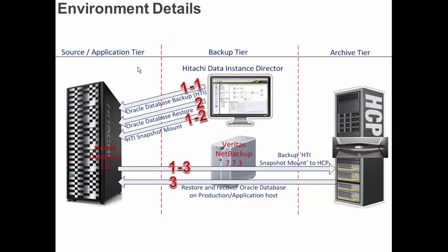These are the environment details of the solution. In Step 1, HDID takes an Oracle database backup with a thin image snapshot on the VSP G600 storage. Blade 6 and Blade 9 are the Oracle Real Application Cluster ASM nodes. Afterwards, HDID mounts the Hitachi thin image snapshot on the mount host, which is Blade 10. Since Blade 10 is installed with Oracle and NetBackup media server, NetBackup backs up the Hitachi thin image snapshot mount to Hitachi Content Platform. This is a one-step automatic process based on the HDID scheduled snapshot and mount, and scheduled NetBackup backup to HCP.